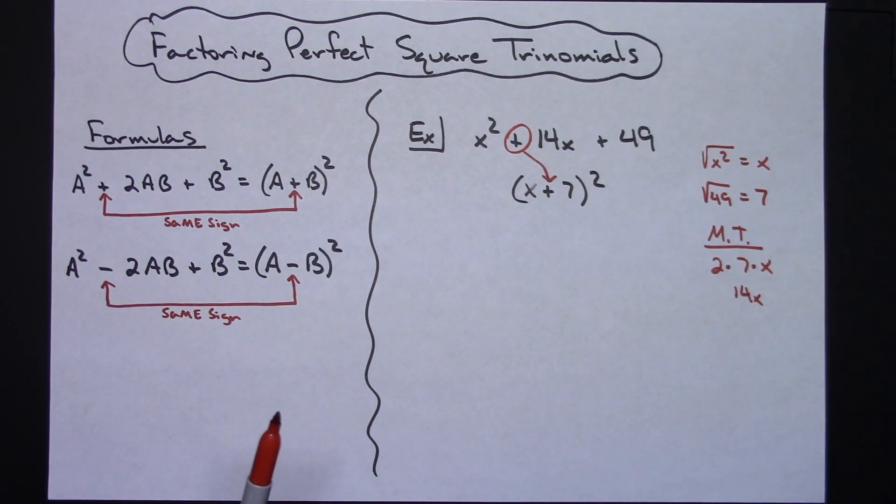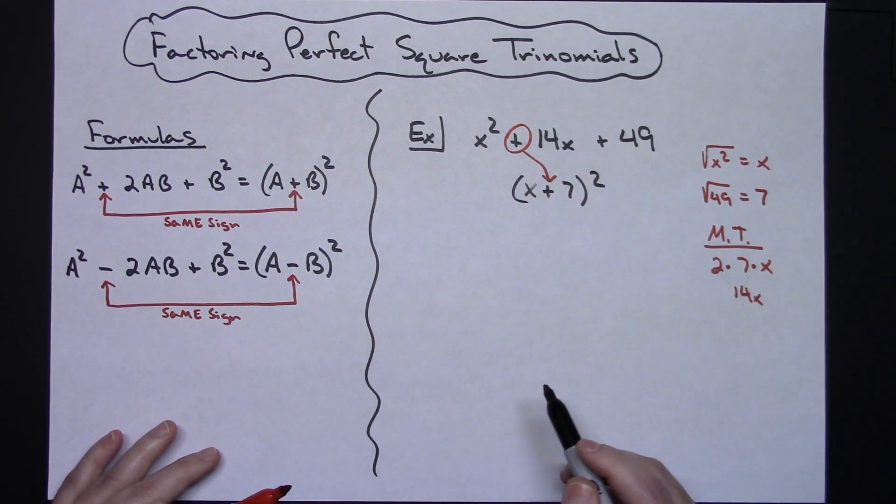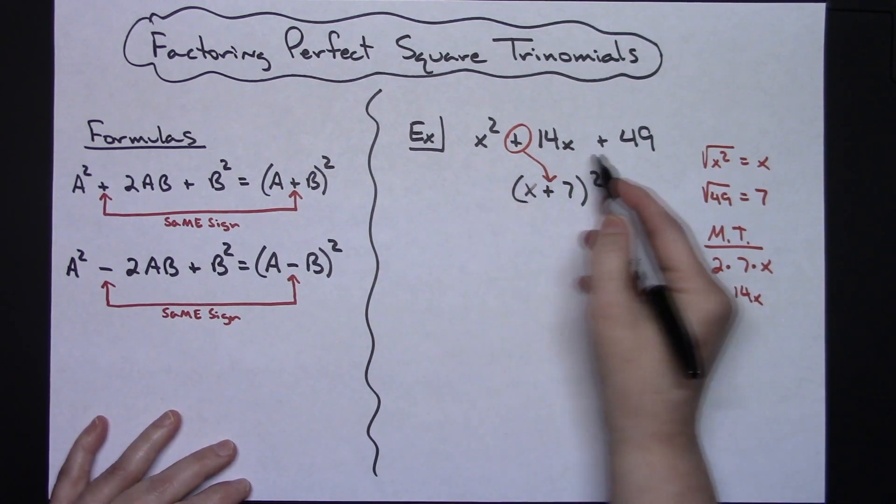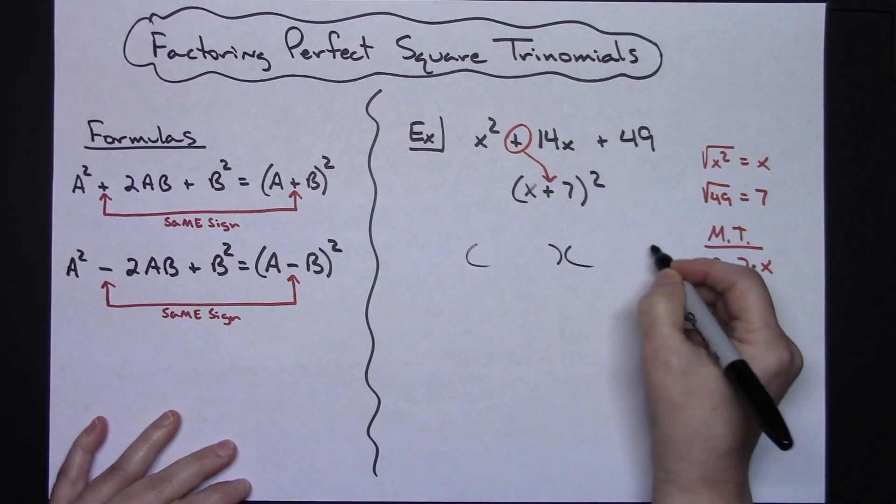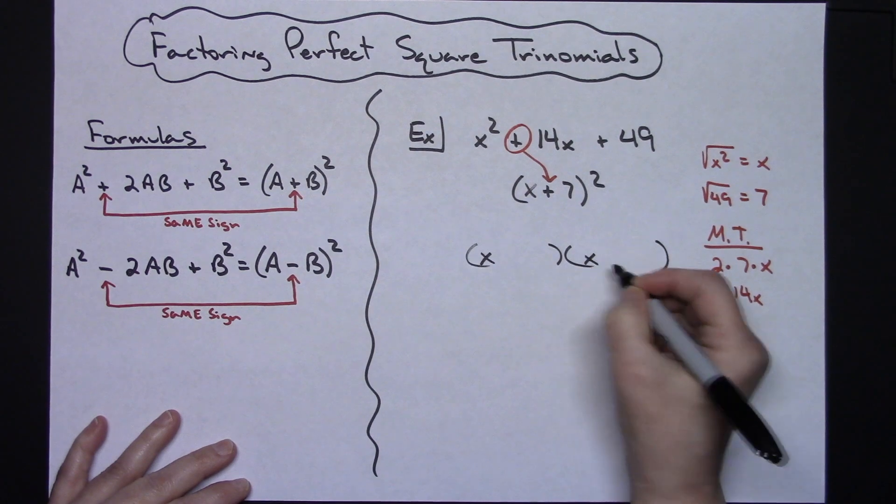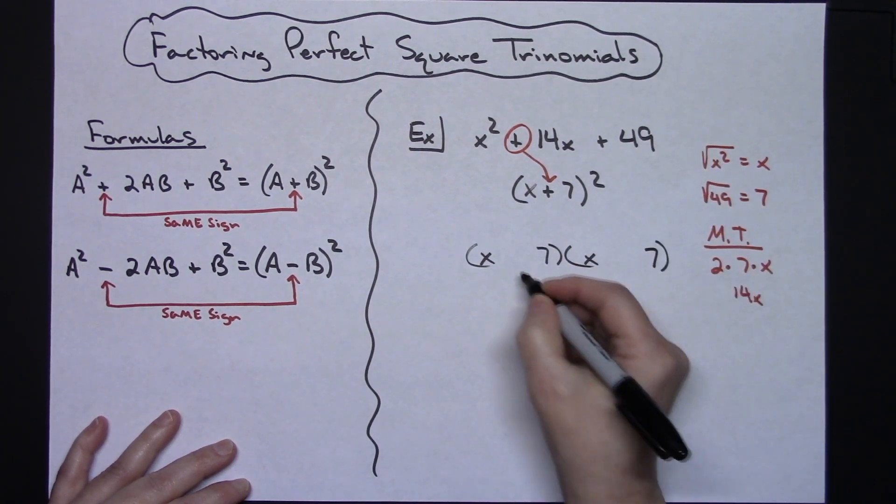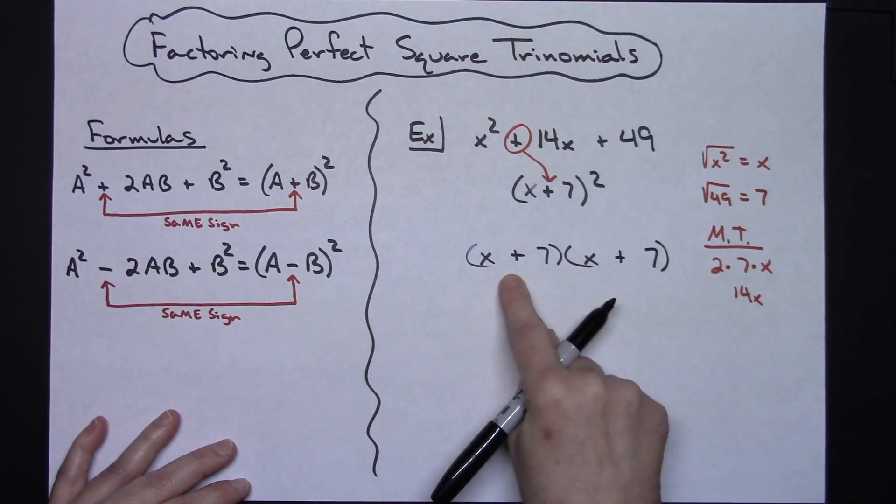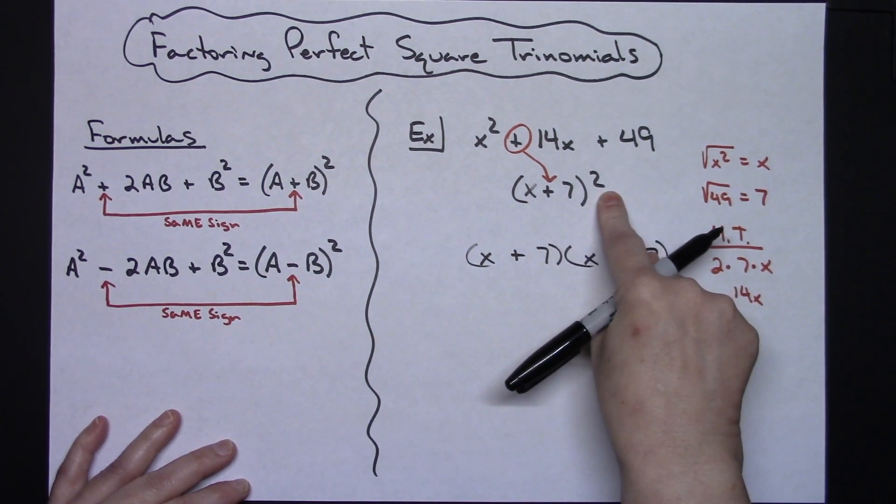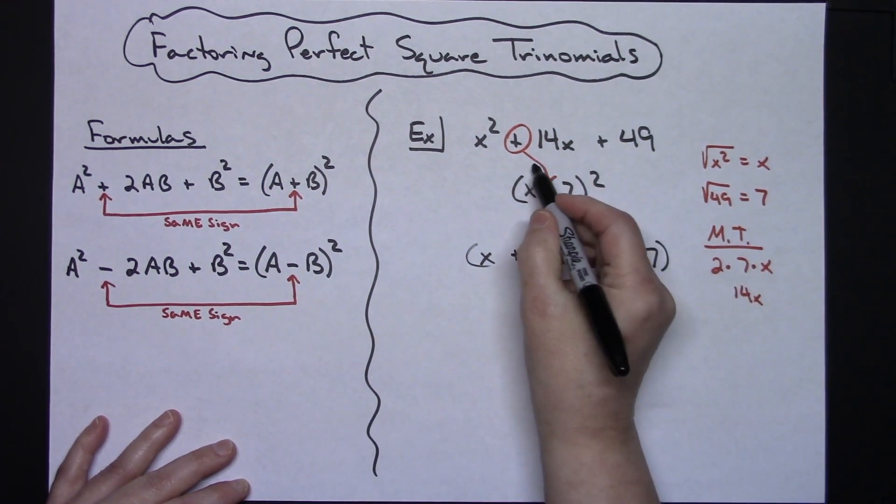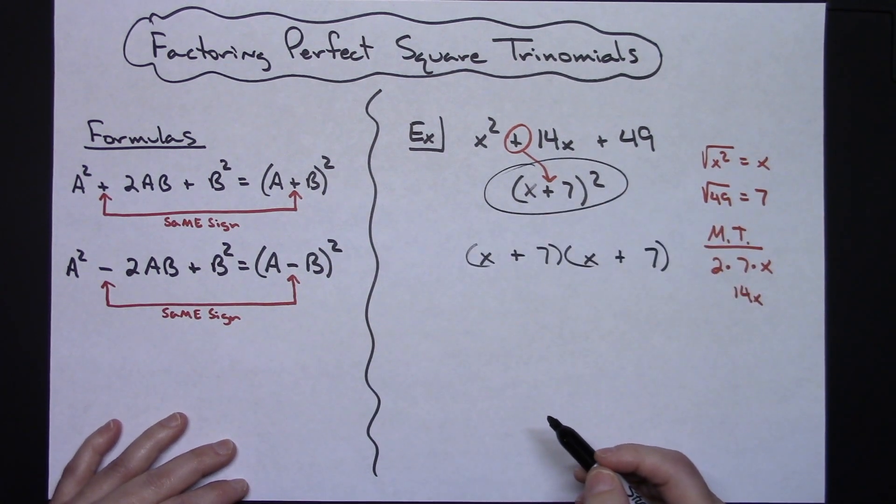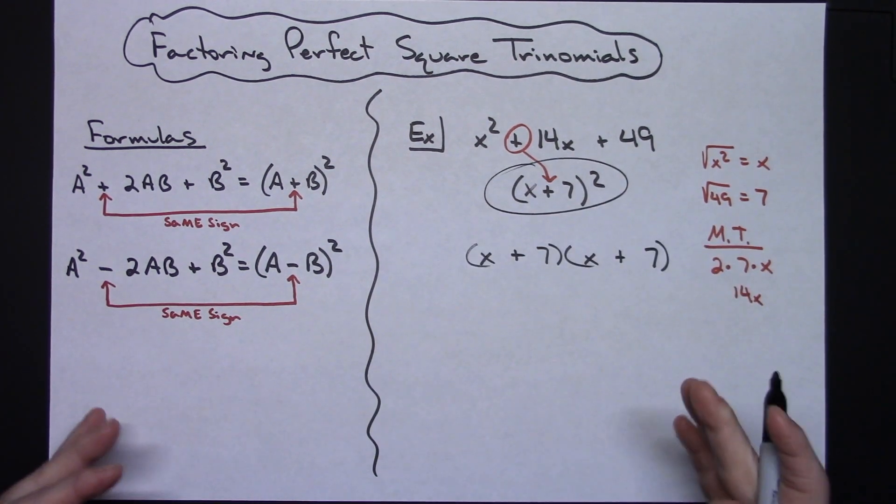Now like I said, if you had not have recognized that this was a perfect square trinomial, you would have guessed and checked this, and you probably would have put an x here and an x here, and then you would have come to the conclusion that I need a 7 here and a 7 here with two pluses. This is the exact same thing as this. Most teachers would prefer the answer written as (x + 7)².